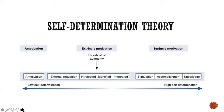Intrinsic motivation can essentially be measured on a continuum. On the right, you have intrinsic motivation, which equals high self-determination. On the far left, we have what we refer to as amotivation, which essentially means not motivated — the 'a' meaning 'not motivated.' These are two very opposite ends of the spectrum: low self-determination means you're not motivated at all, while intrinsic motivation means you are highly self-determined.